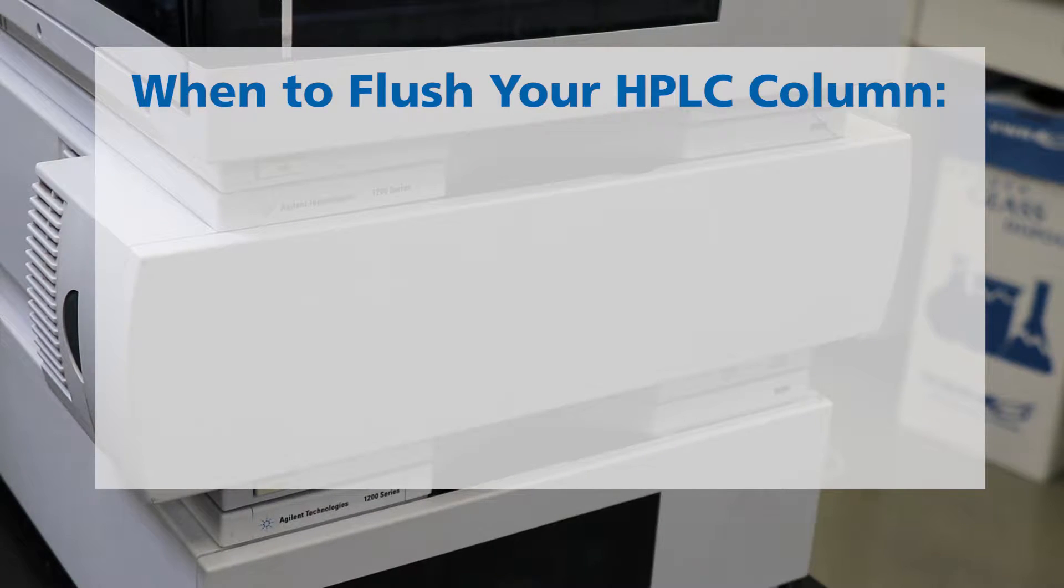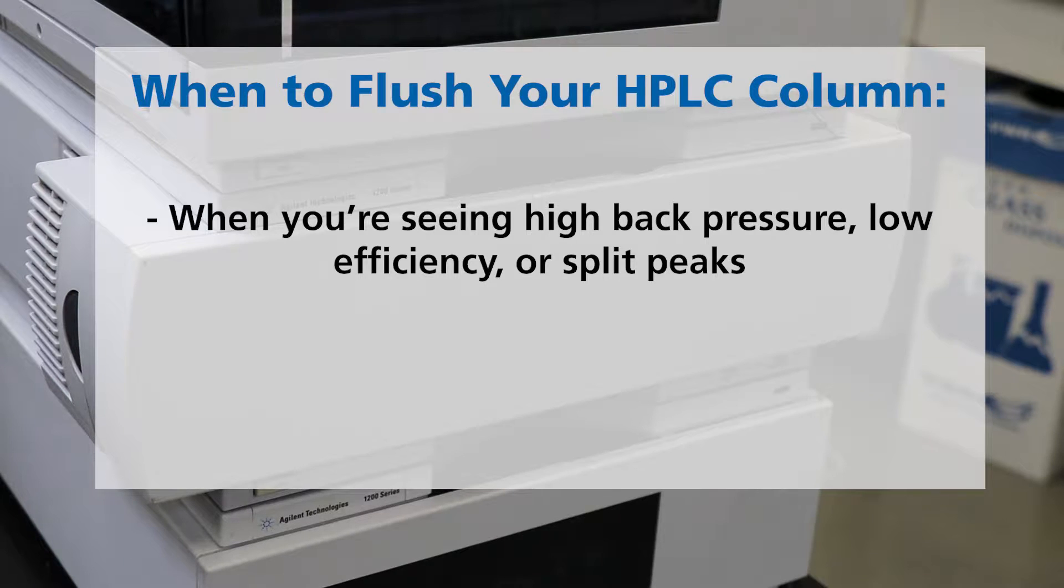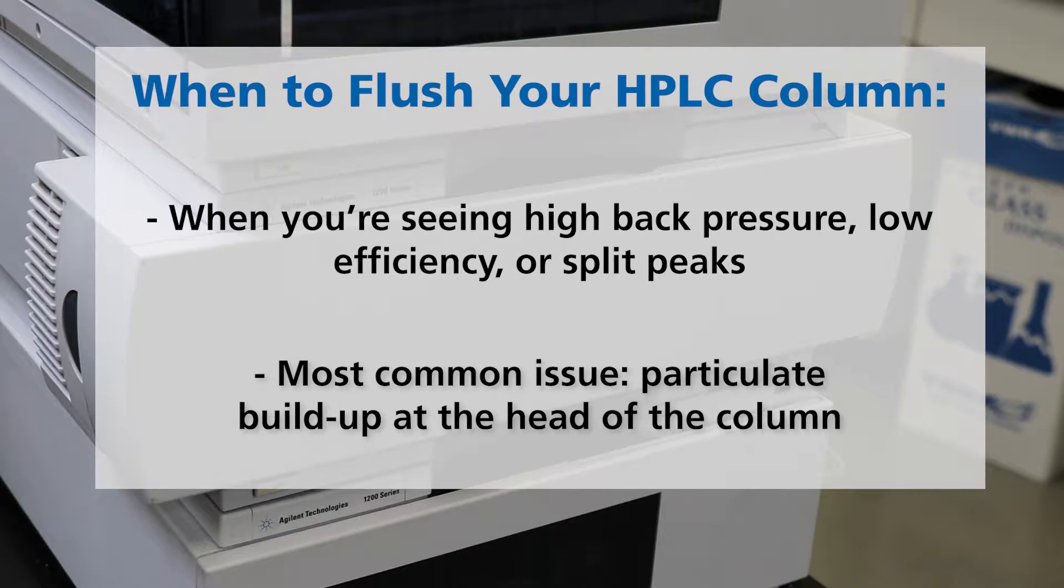For this column cleaning guide, we usually suggest that when you're seeing high back pressure, low efficiency, or split peaks, the most common issue is there's some particulate buildup at the head of the column.